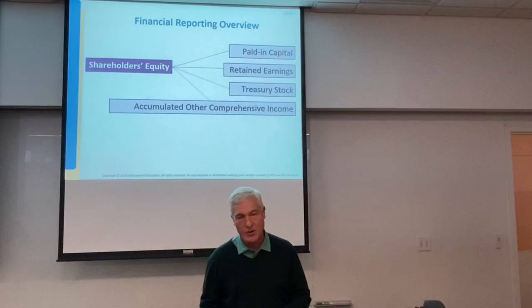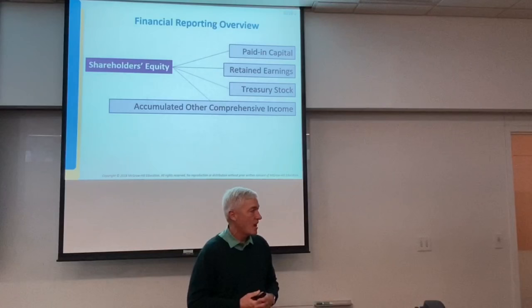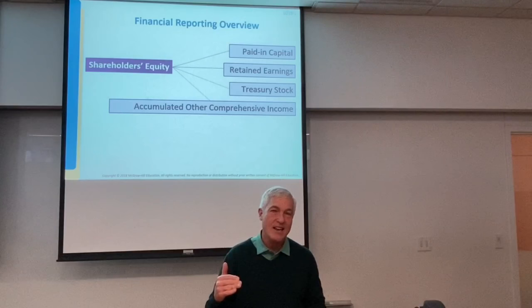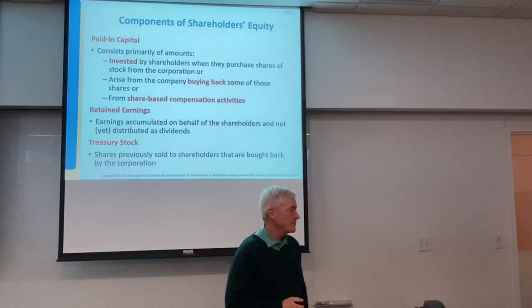So here are the four components of shareholders' equity: two primary — paid-in capital and retained earnings — then treasury stock, which is a purchase of our stock. What kind of balance does treasury stock have? It's a debit balance, because credits increase equity and debits reduce equity. Treasury stock is a negative equity, a reduction in equity when we buy our shares back. And then finally, accumulated other comprehensive income.